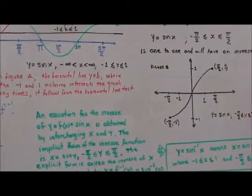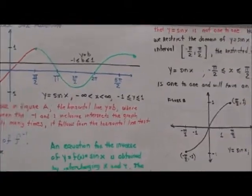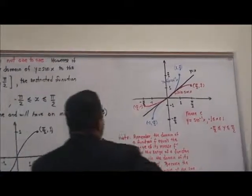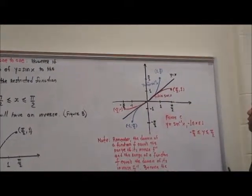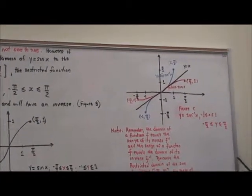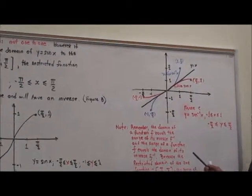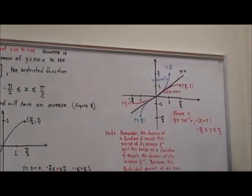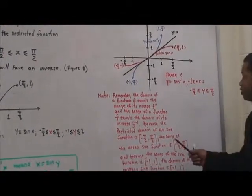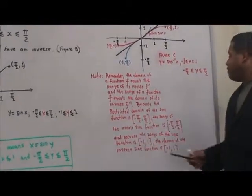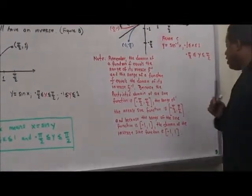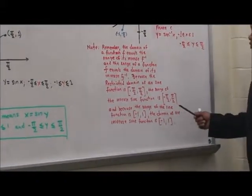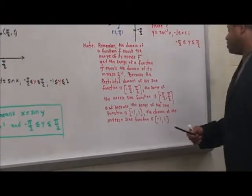Remember property three: the graph of f and f inverse are reflections of one another about the line y equals x — as shown in this picture. The domain of f equals the range of f inverse, and the range of f equals the domain of f inverse. Because the restricted domain of the sine function is negative pi over 2 to pi over 2, that is also the range of the inverse sine function. And because the range of the sine function is negative one to one, the domain of the inverse sine function is negative one to one.